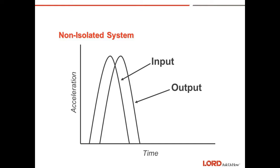Non-isolated system: In an unisolated system, there is no shock mitigation between the outside environment and the device. In an unisolated system, the peak acceleration of the input is approximately equal to the peak acceleration of the equipment. Therefore, your input is exactly the same as the output. The area under the curve is the same for both the input and output.